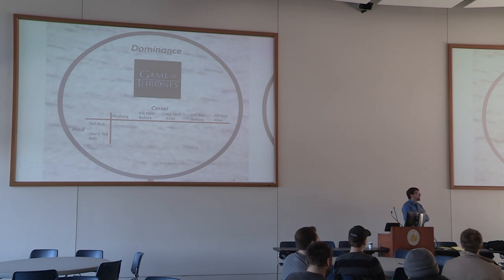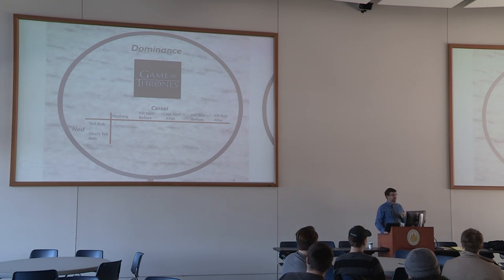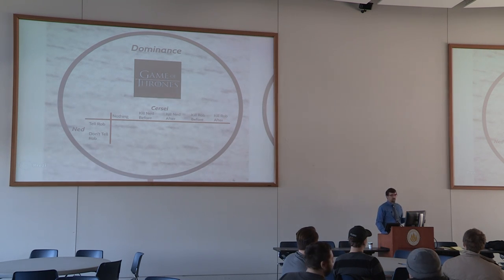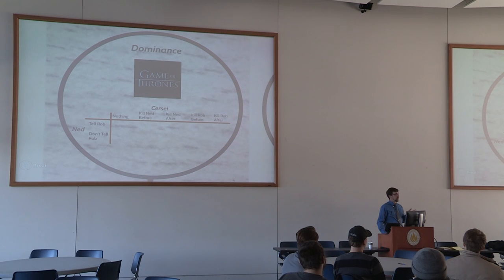The reason that happened is because telling the truth was what we call 'dominated' in game theory — there was a strategy better than telling the truth in every instance regardless of what the opponent plays. Dominance is a great way to simplify a game. Game of Thrones is a good example of dominance, though I don't have a clip for this — partly because I've never seen it, so I'm going on the description my student gave me.